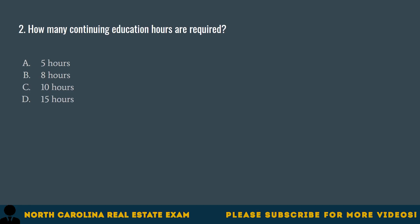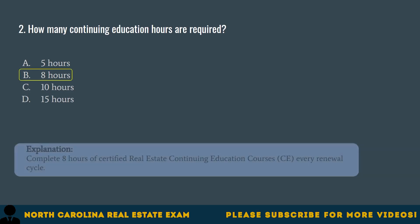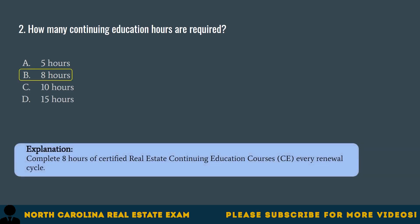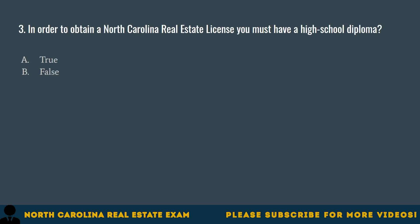Question 2. How many continuing education hours are required? A. 5 hours. B. 8 hours. C. 10 hours. D. 15 hours. The correct answer is B. 8 hours. Complete 8 hours of Certified Real Estate Continuing Education courses, CE, every renewal cycle.